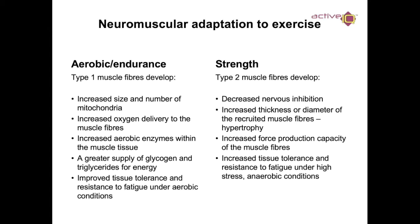For strength training — type 2 muscle fiber development — neuromuscular adaptations include decreased nervous inhibition, increased thickness or diameter of accrued muscle fibers (known as hypertrophy and muscle growth), increased force production capacity for muscle fibers, and increased tissue tolerance and resistance to fatigue under high-stress anaerobic conditions.